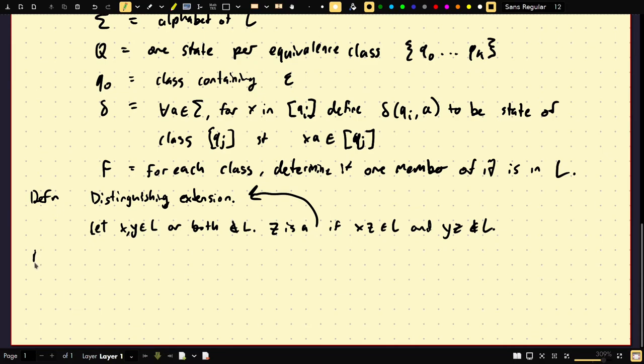So, to prove non-regularity, make an infinite set S and find distinguishing extension for all pairs in S. It has to be an infinite set for this, because if I find a distinguishing extension for two strings, then maybe they were at different states to begin with, right? So, I'm going to do, I don't need any more room, actually. This is how easy the proof is for these things.